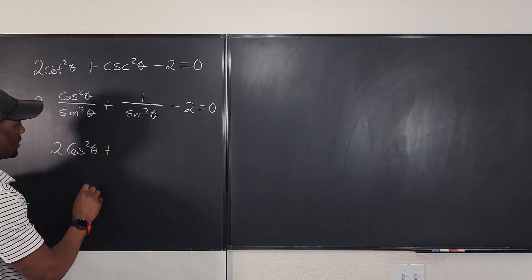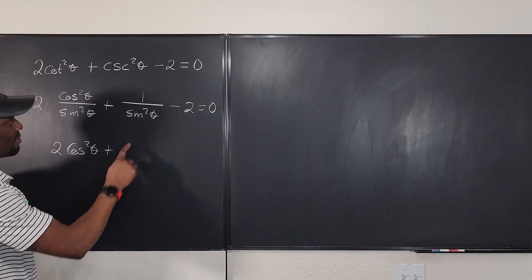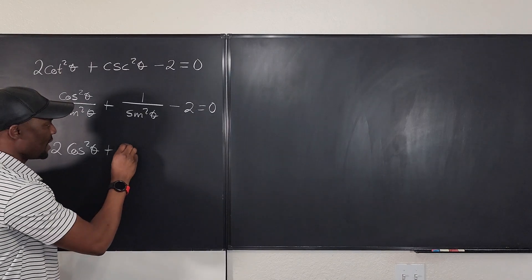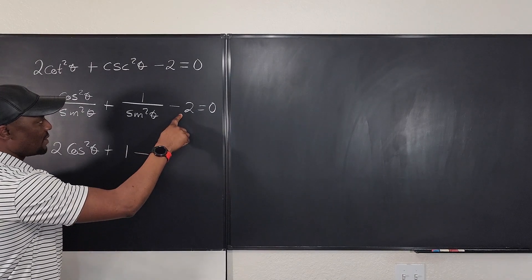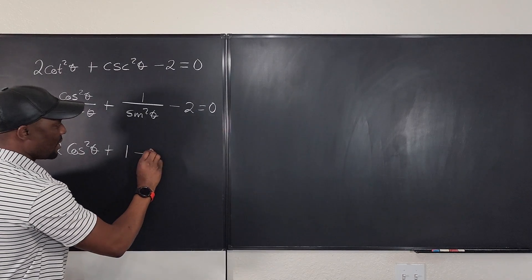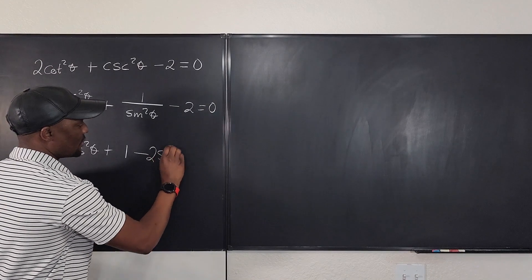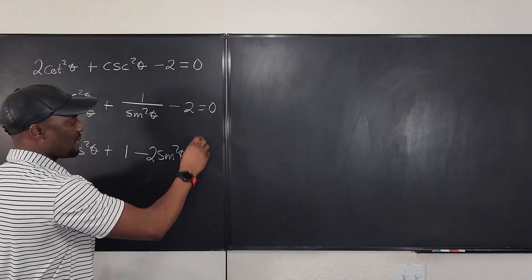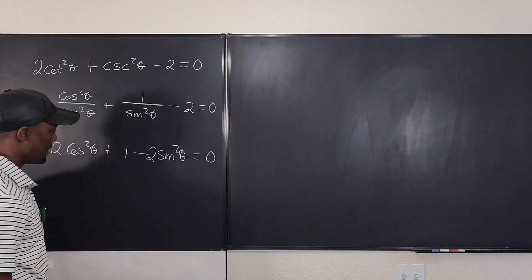Plus — if I multiply this term by sine squared theta, I'm going to get 1. If I multiply the next term by sine squared theta, I'm going to get 2 sine squared theta. And if I multiply the last term by sine squared theta, I'm going to get 0.